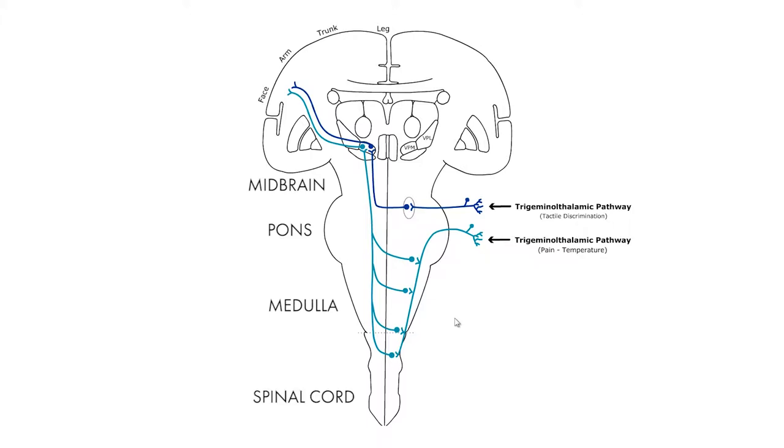Now, pain and temperature, which we're going to go through first, comes in from the face, and it does something very strange. This first neuron, the trigeminal ganglion neuron, comes in and it descends, it descends all the way down, some people say C4, C5, to the cervical level. Then it synapses, and the second neuron crosses and forms the trigeminal thalamic tract and goes up to the thalamus and then on to the cortex.